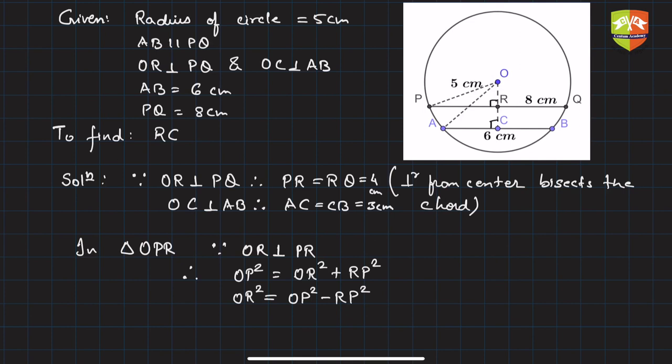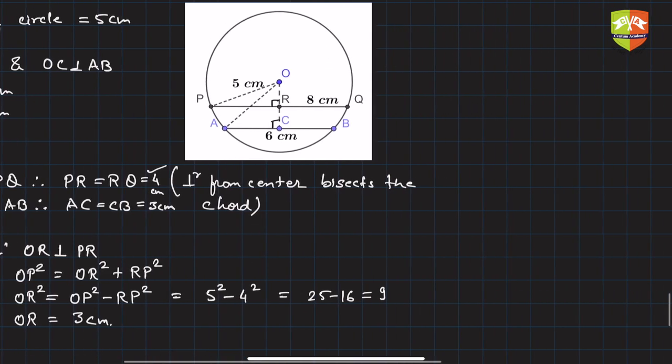So it is equal to OP², which is 5², minus RP², which equals 4². You can check here, RP is 4. So it is 25 minus 16, which is 9 cm². So OR will clearly be 3 centimeters. OR is 3 centimeters, remember this.